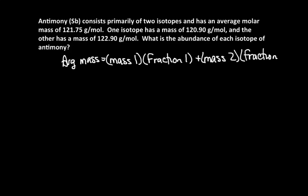In this problem we've got all of the masses and none of the fractions. So let's put in what we know. The average mass we know to be 121.75. The mass of isotope 1 is 120.90 grams per mole, and its fraction we don't know, so we'll just call that X.